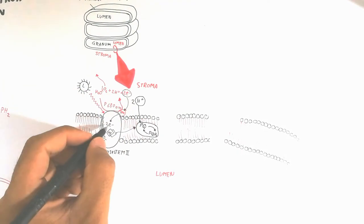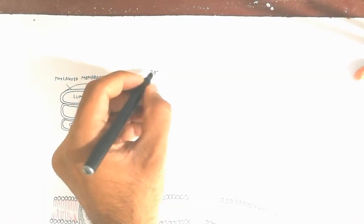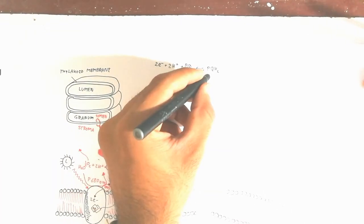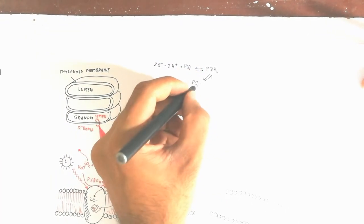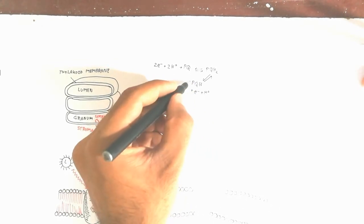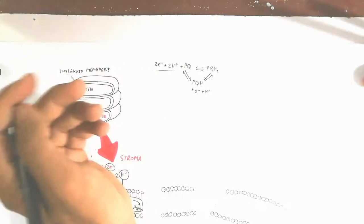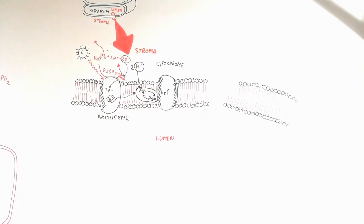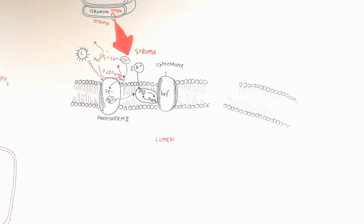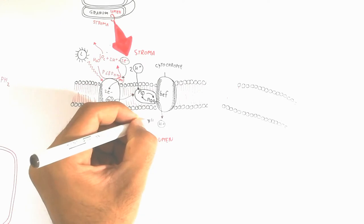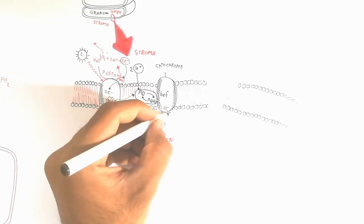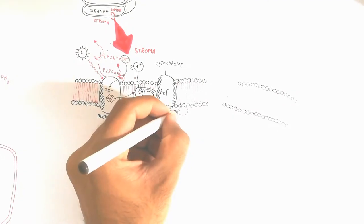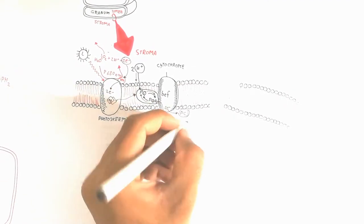Two electrons and two protons are absorbed by two plastoquinone molecules, converting them to plastoquinol (plastoquinone H2). This is a reversible reaction — hydrogen and electrons can be released and the cycle repeats. The cytochrome bf complex accepts the electrons but releases protons into the lumen, and the two electrons pass on to plastocyanin.